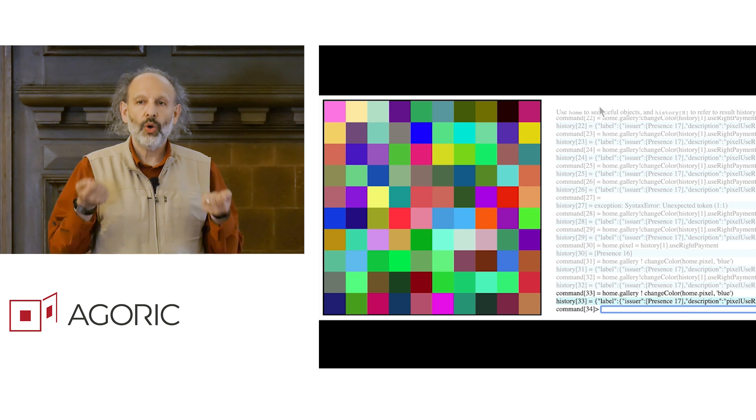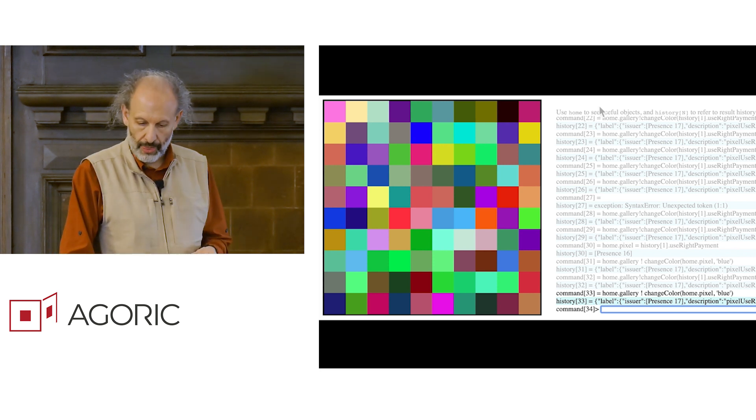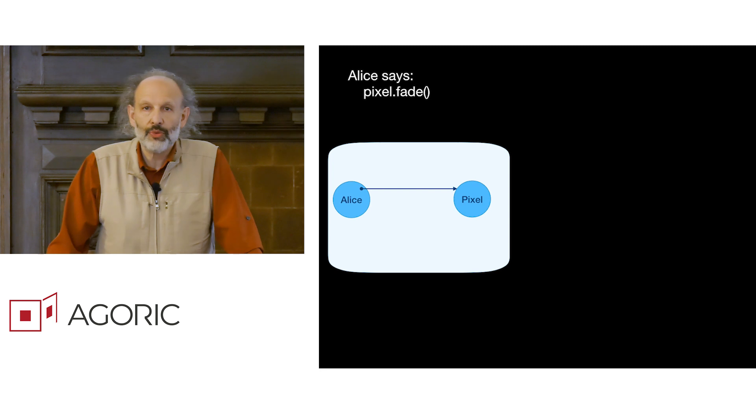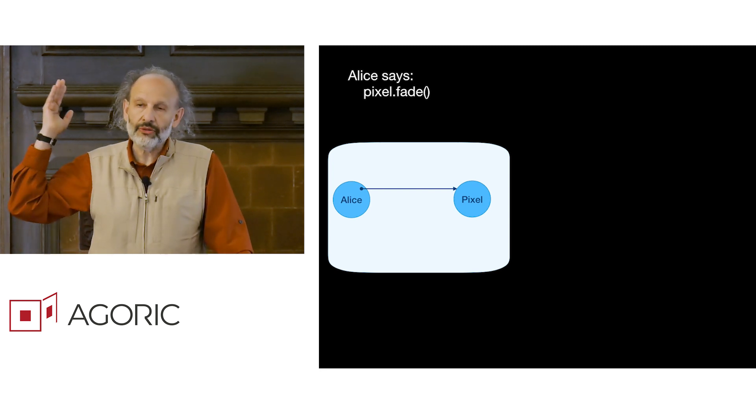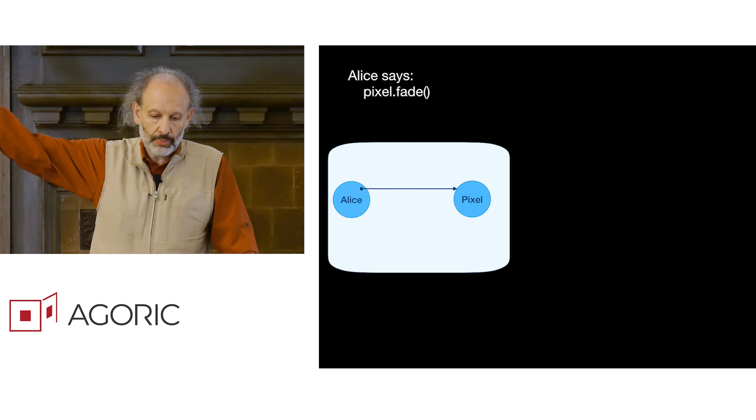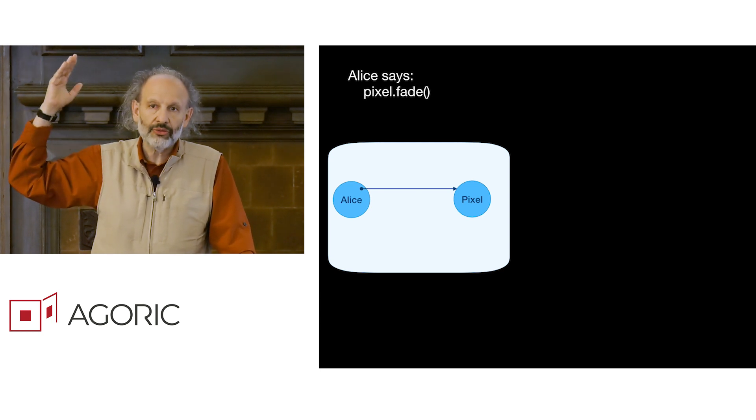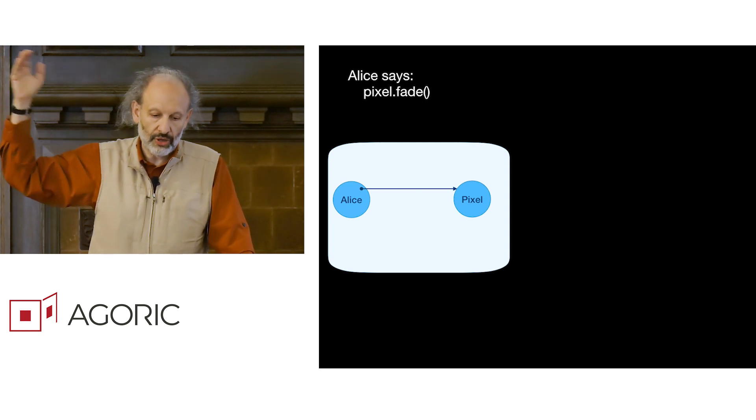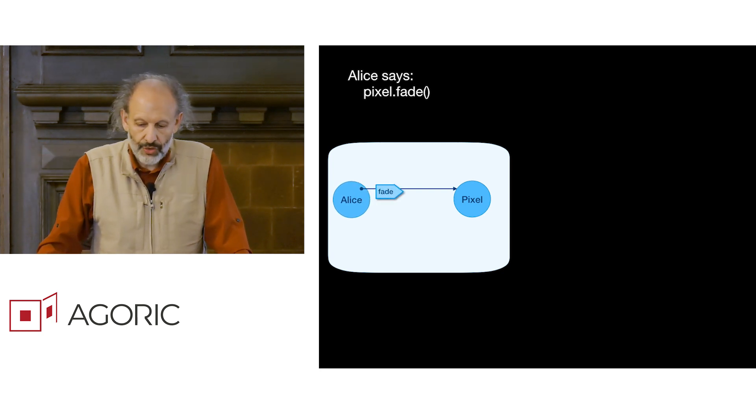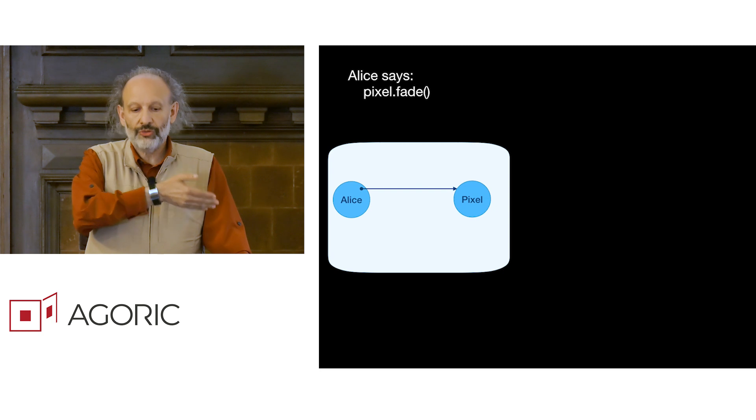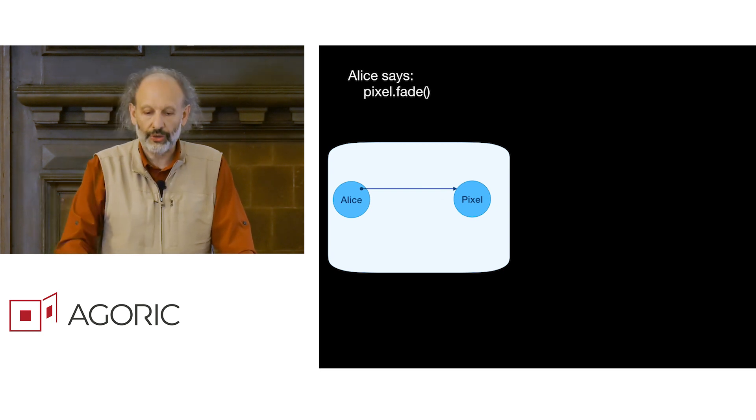So what's going on under the surface? As is familiar from any memory safe object programming language, if object Alice has a reference to object pixel, object Alice can invoke object pixel, can say pixel.fade. And the result is that a fade message goes from Alice to the pixel.